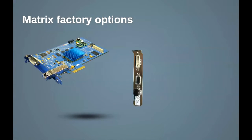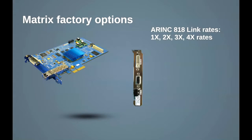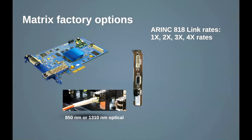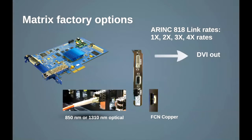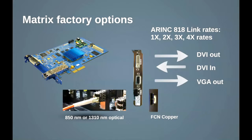Matrix and Matrix Plus cards come with many factory options. You can specify the ARINC 818 interface as 850 or 1310 optical with common LC style plugs, or even choose FCN copper. Order it with DVI video output, or if you need DVI to fiber conversion, order DVI video input. DVI input cards can also have a VGA output port if required.